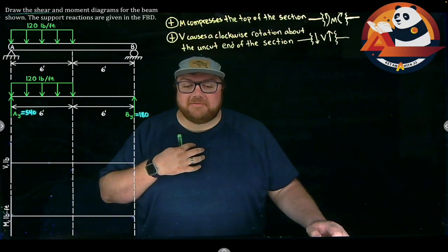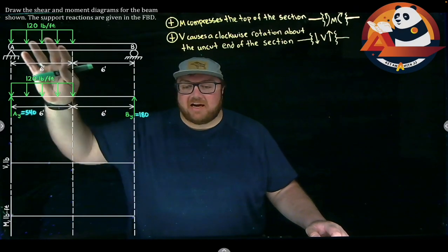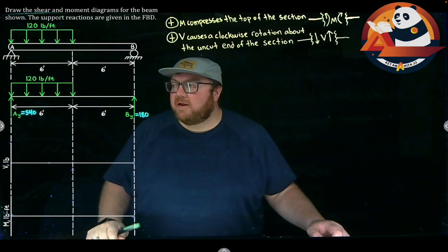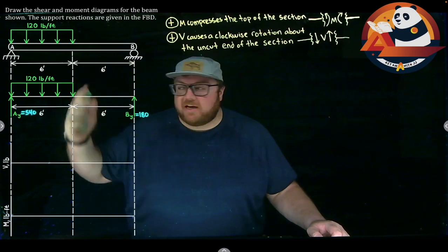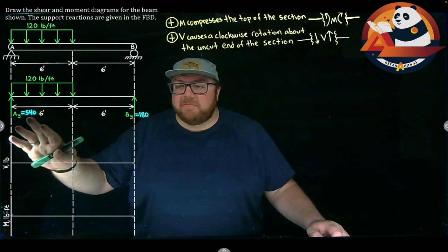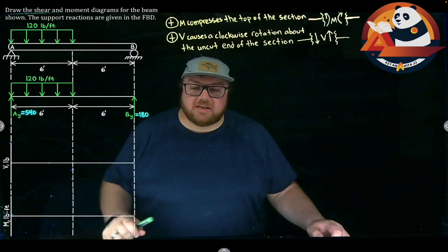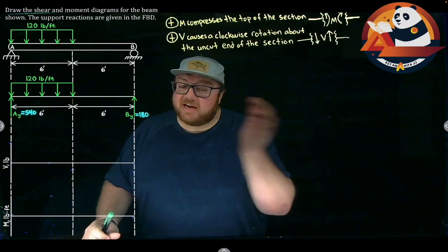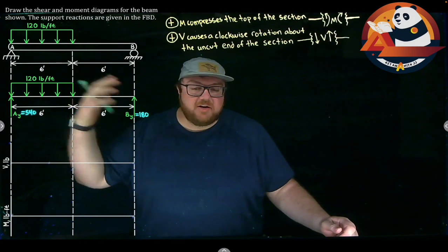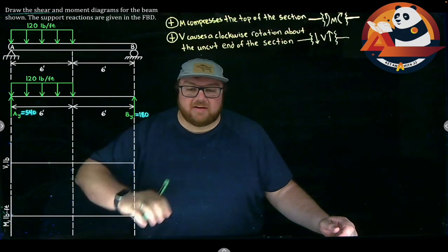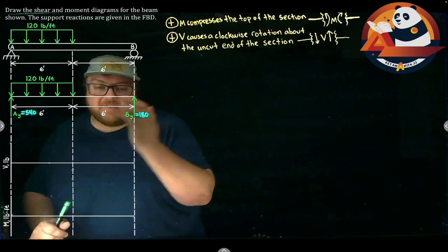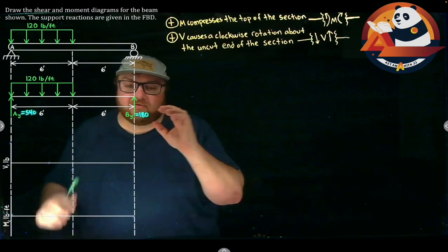Welcome everyone, I am JJ. Let's go ahead and tackle an example problem. We're going to draw the shear and moment diagrams for the beam shown. Support reactions are given in our free body diagram. I'm assuming we can all find support reactions at this point — if that's a struggle, take a look back at previous problems rather than using the time in this video. Get caught up to speed on how we find support reactions before tackling shear moment diagrams.